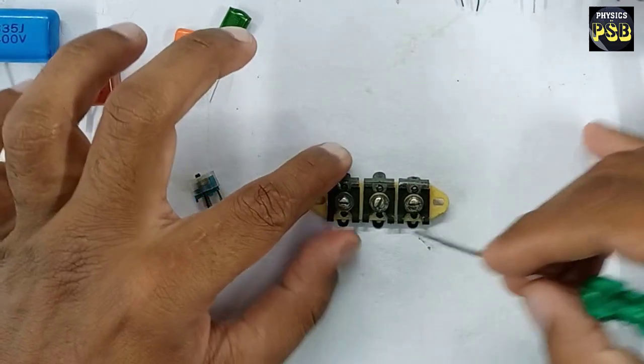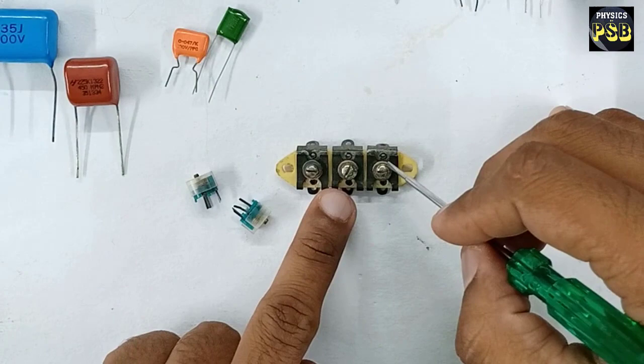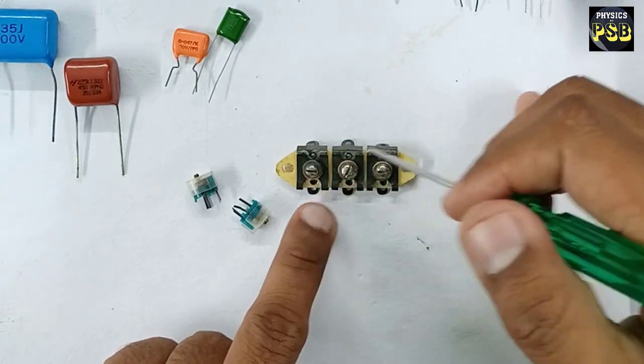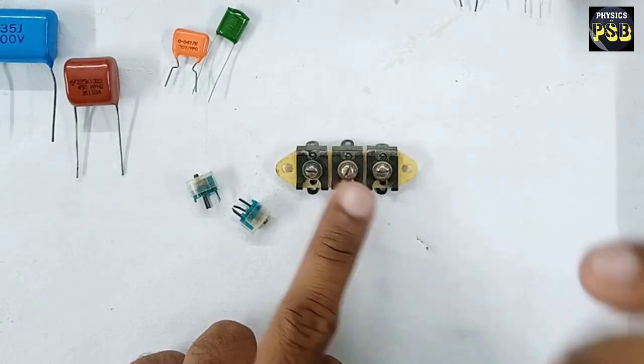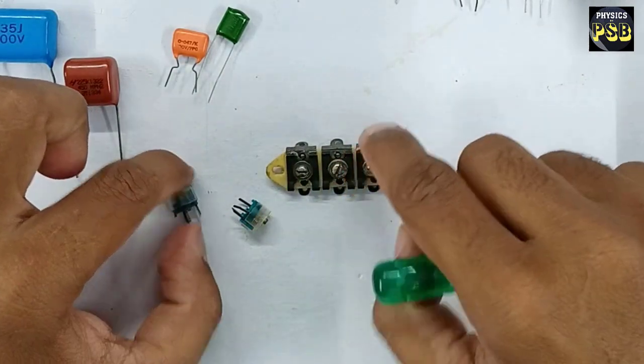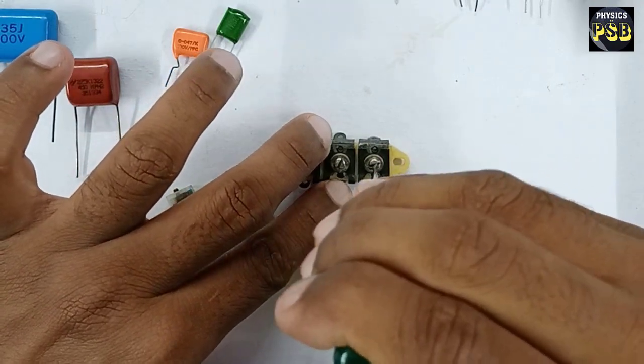This one is another trimmer capacitor. It is called a triple compression trimmer capacitor. Their capacitance can be varied if we rotate the screw present in them.